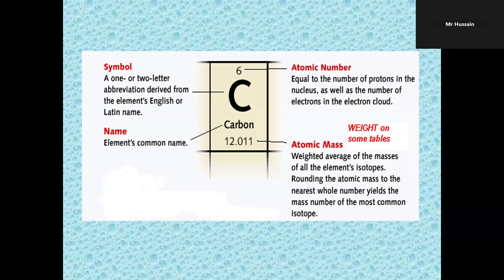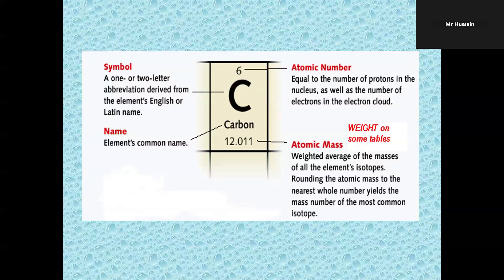Now you can look at this: symbol, name, atomic number, atomic mass. What is atomic mass? The average of the masses of all the element's isotopes. Rounding the atomic mass to the nearest whole number means the mass number of the most common isotope.